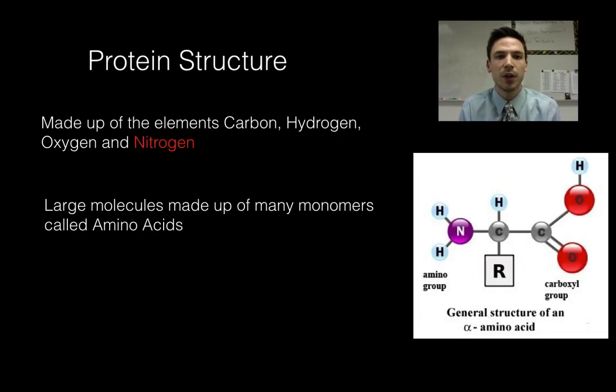Alright, our next macromolecule here is proteins. So proteins are going to be made up of carbon, hydrogen and oxygen again, but they're also going to use this other type of element called nitrogen. So proteins are going to be large molecules and their monomers are going to be what we call amino acids.